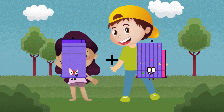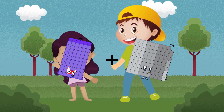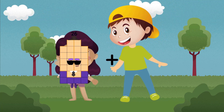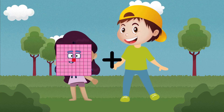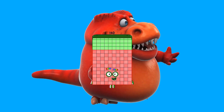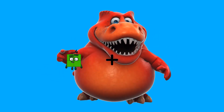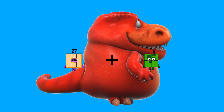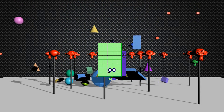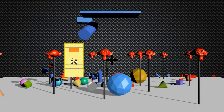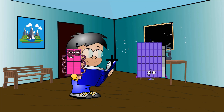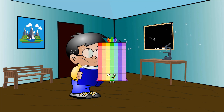66 plus 99 equals 165. 81 plus 59 equals 140. 27 plus 19 equals 46. 8 plus 69 equals 77.